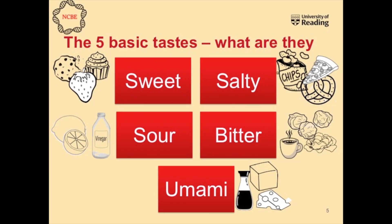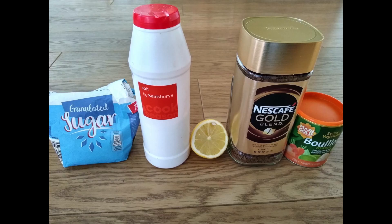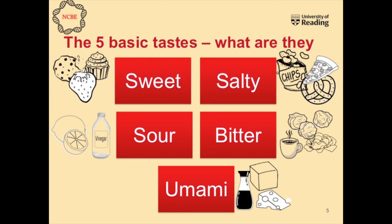So I'm sure you came up with most of these, but our five basic tastes are sweet, salty, sour, bitter and umami. In the picture you can see some of the foods I came up with that can really help us to describe those tastes. There are lots of other ones that you might have come up with. We're going to go through each of these tastes individually and you can find out a little bit more about them.